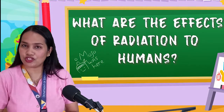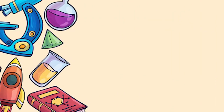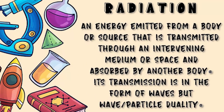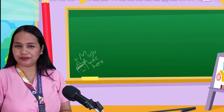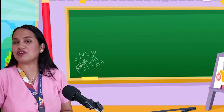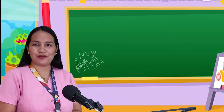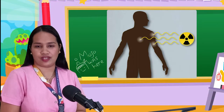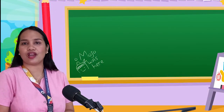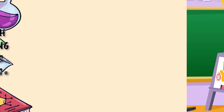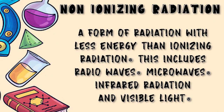What are the effects of radiation on humans? Radiation is energy emitted from a body or source that is transmitted through an intervening medium or space and absorbed by another body. Its transmission is in the form of waves or particles. We live in a sea of radiation, and our bodies are exposed to radiation constantly. Radiation only becomes a problem if we are exposed to too much of it. It is classified as either non-ionizing or ionizing. Non-ionizing radiation is a form of radiation with less energy than ionizing radiation, and includes radio waves, microwaves, infrared radiation, and visible light.